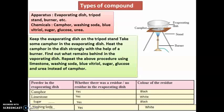To understand what the different types of compounds we have, let's carry out a small experiment. The apparatus we need are an evaporating dish, a tripod stand, and a burner — as you can see in this diagram. The chemicals we require are camphor (naphthalene balls), washing soda, blue vitriol, sugar, glucose, and urea. These are some of the compounds taken for this experiment.